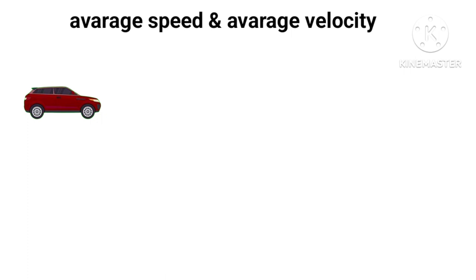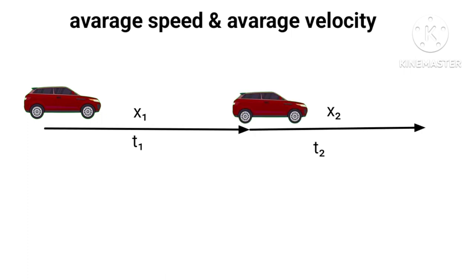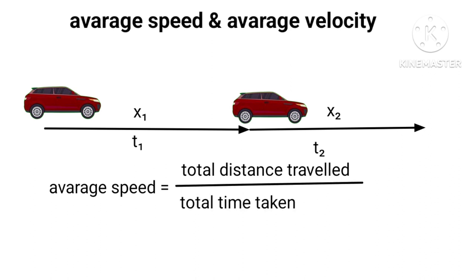A car travels a distance of X1 in time T1, another distance X2 in time T2. Then average speed equals X1 plus X2 divided by T1 plus T2. Hence, average speed equals total distance traveled divided by total time taken.